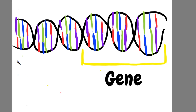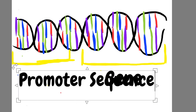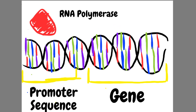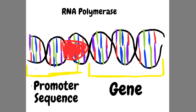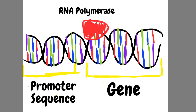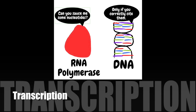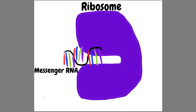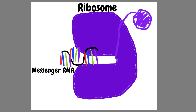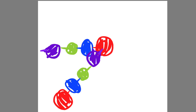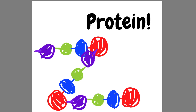Right before the gene is this other set of nucleotides called the promoter sequence. An enzyme called RNA polymerase binds here and begins copying the gene, but only from one strand of DNA. This process is called transcription, and when the RNA polymerase is done plagiarizing the DNA, it has a single strand of nucleotides called messenger RNA. This messenger RNA goes to the ribosome of the cell, which, in a process called translation, turns the messenger RNA into a protein.